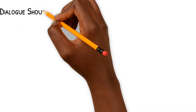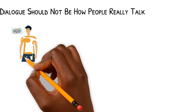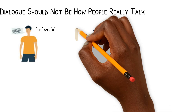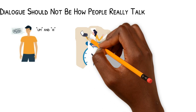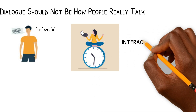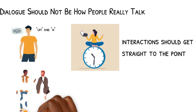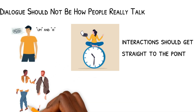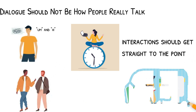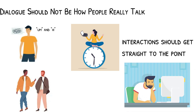Dialogue should not be how people really talk. When people talk, it's full of errors and nonsense like "um" and "uh." With the time limitations you'll have in a script, you need to clean up the dialogue to get to the point. This means that the interactions should get straight to the point. Do people speak the way they do in scripts as they do in real life? Absolutely not. But people don't want to listen to how real-life conversations unfold — this would be extremely boring and wouldn't help move your marketing efforts ahead.